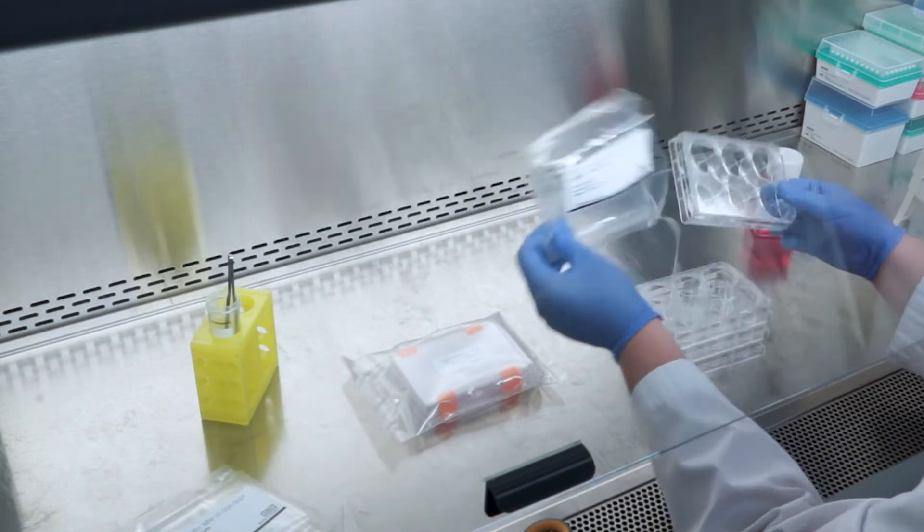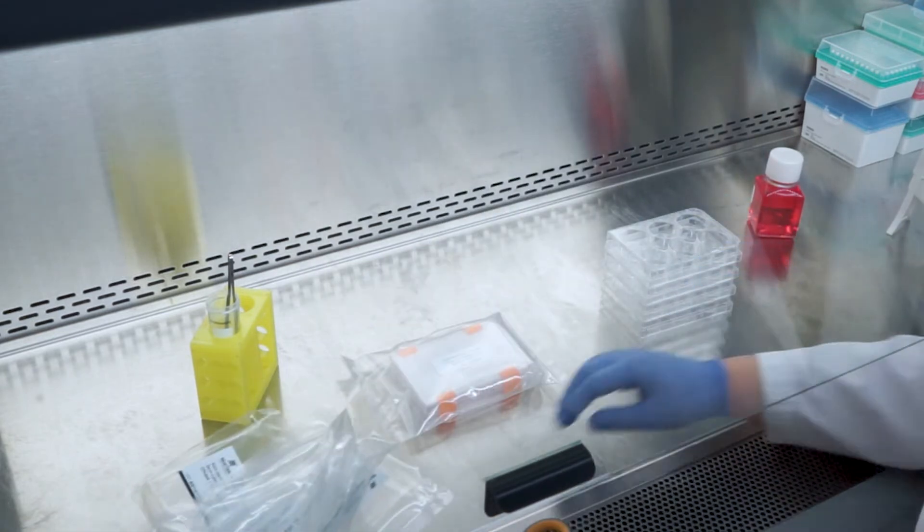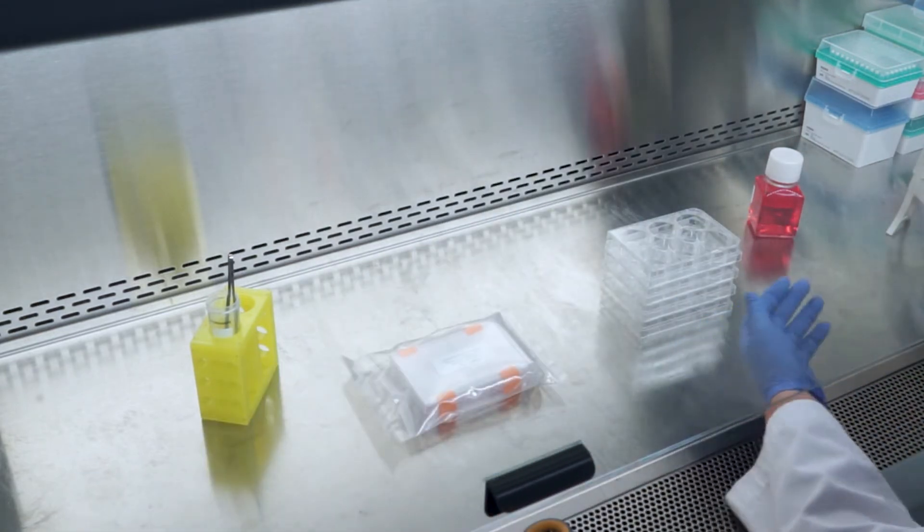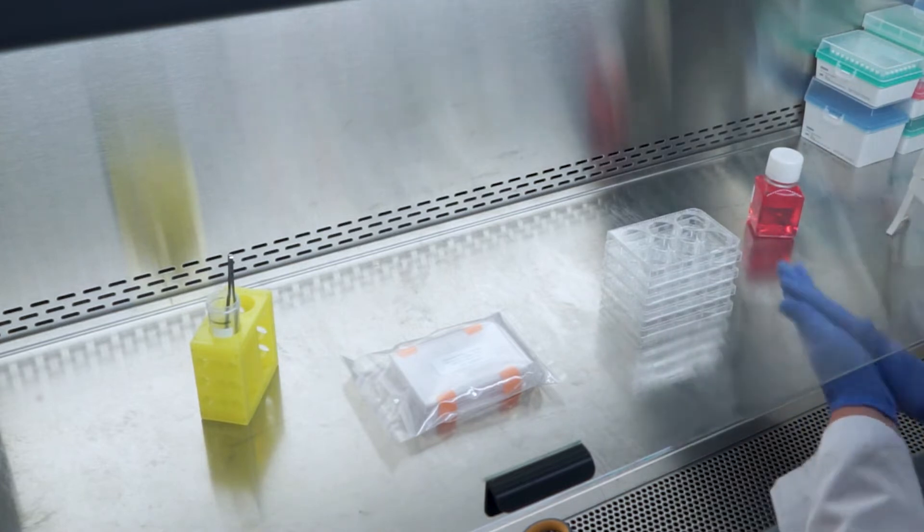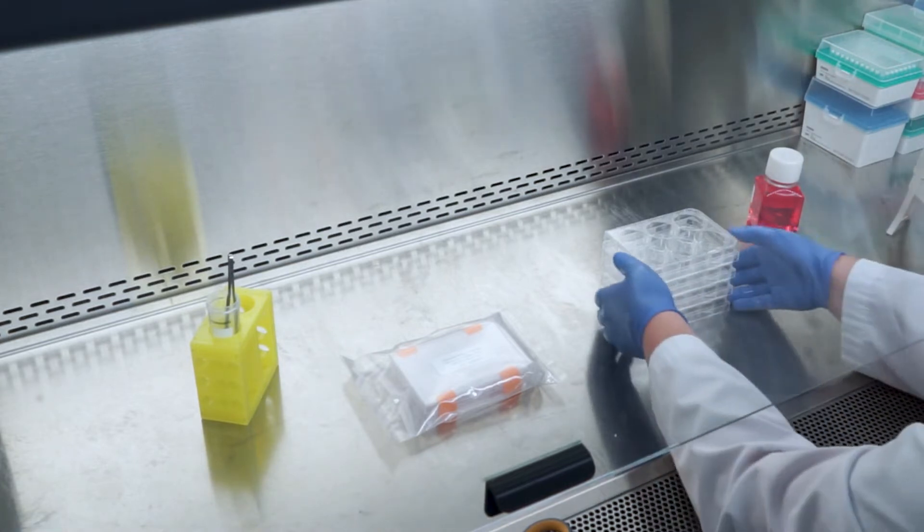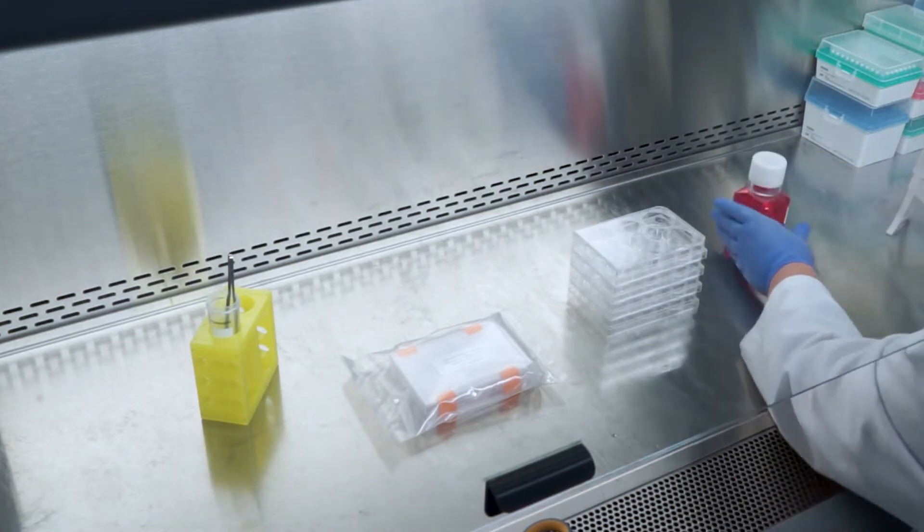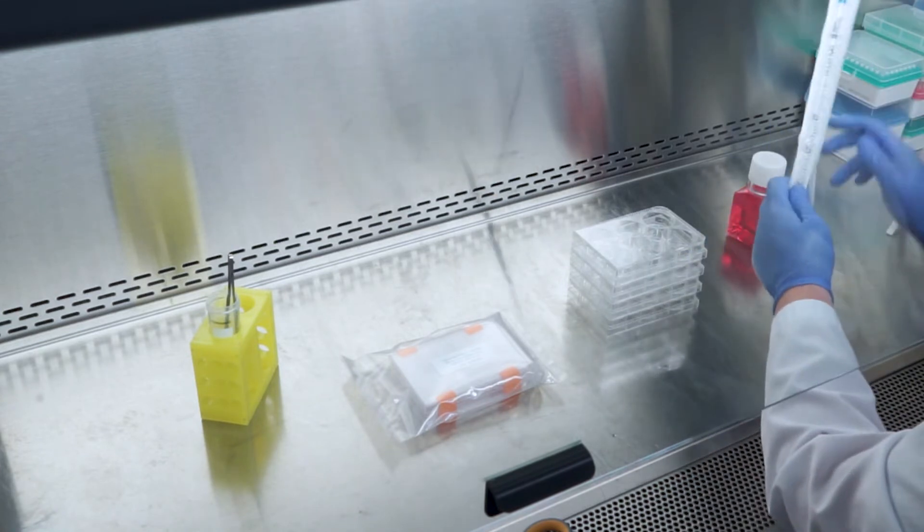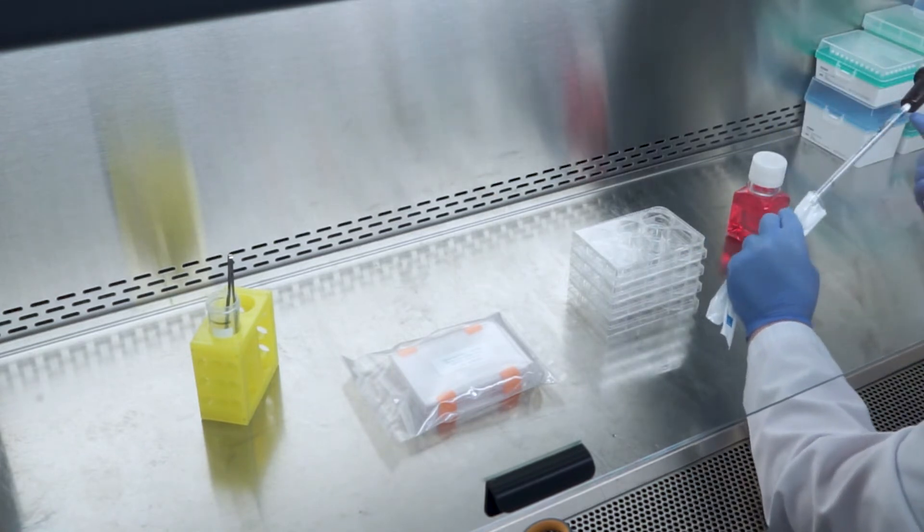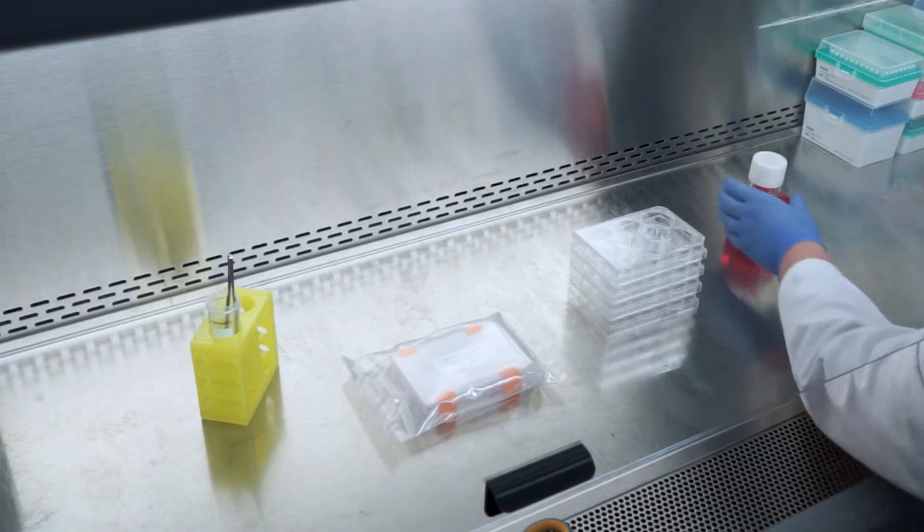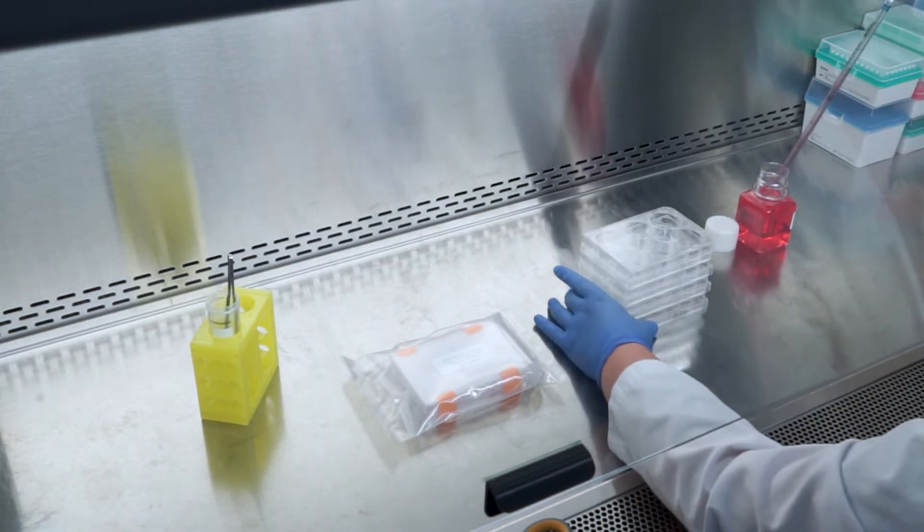To do so, using sterile technique, place assay medium, the four six-well plates, and the tissue plate provided in a tissue culture hood. Remove plastic wrapping from the four six-well plates and label accordingly as you see fit.